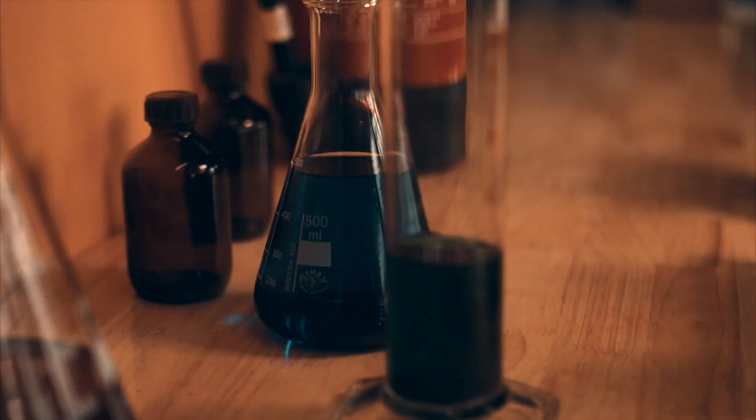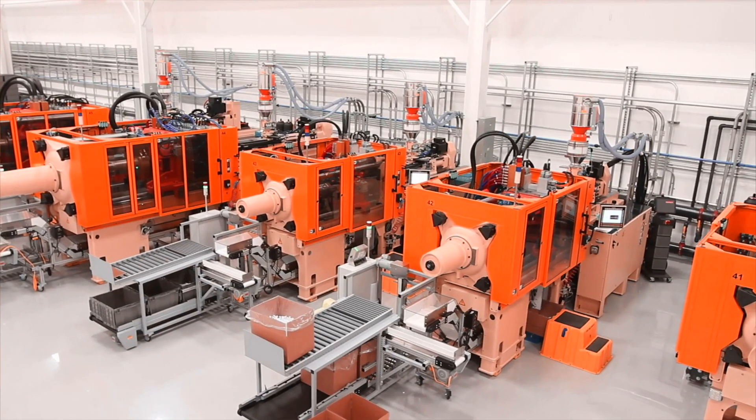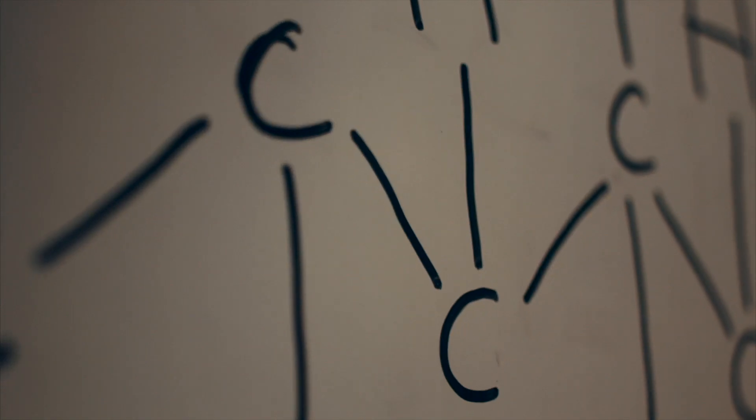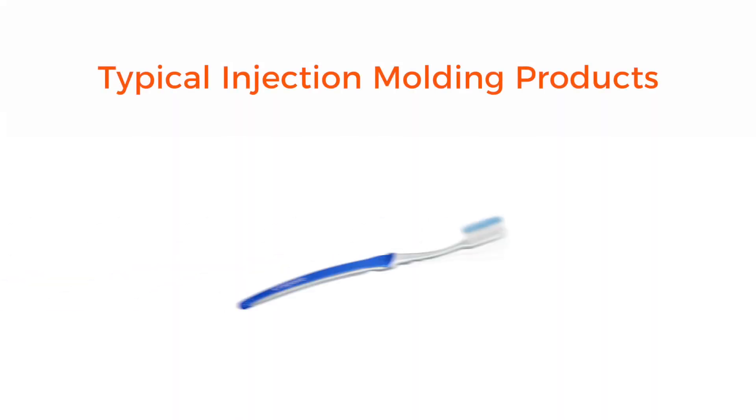Injection moulding is the most common production method to create plastic products. The technology is used to create many products we use every day, from a toothbrush to the handle of a pressure cooker, from toys to medical equipment.